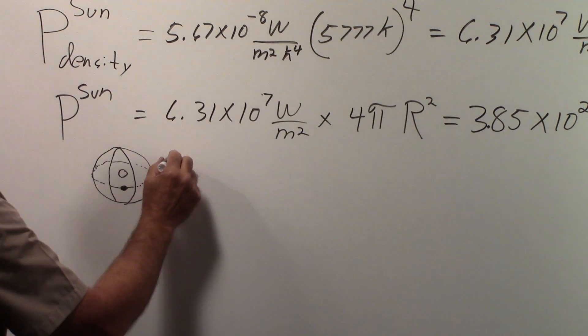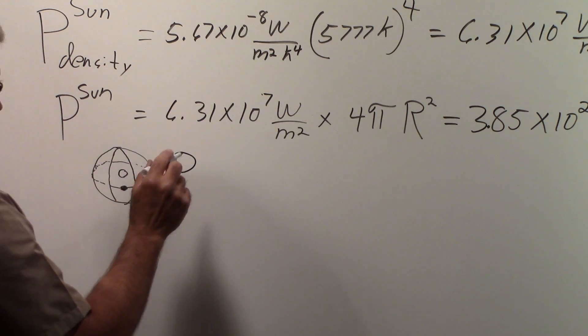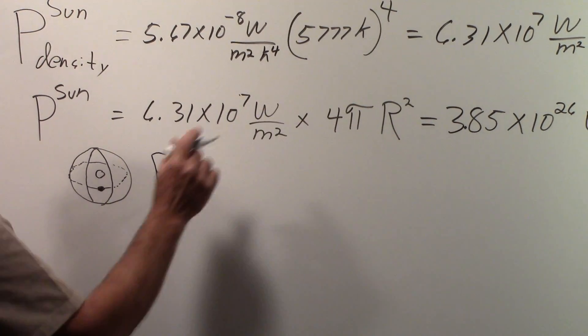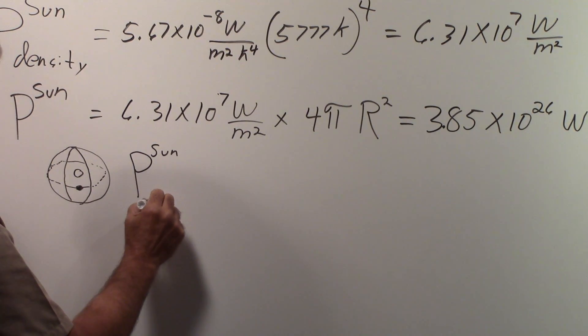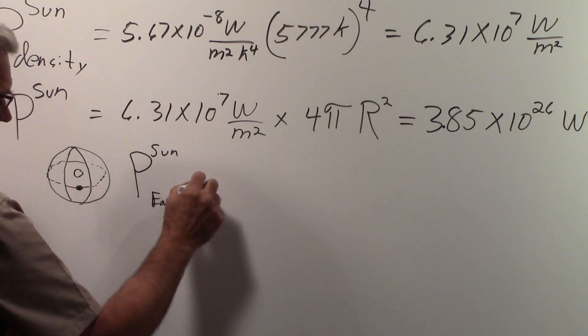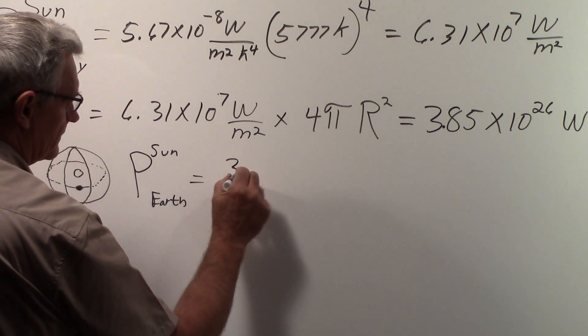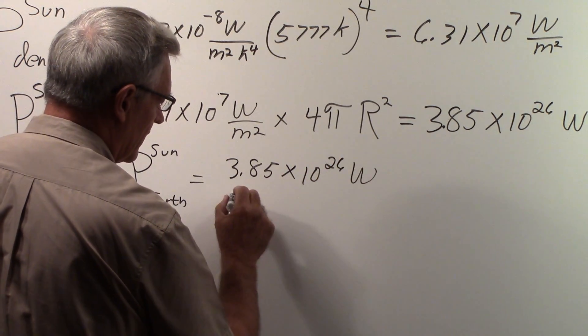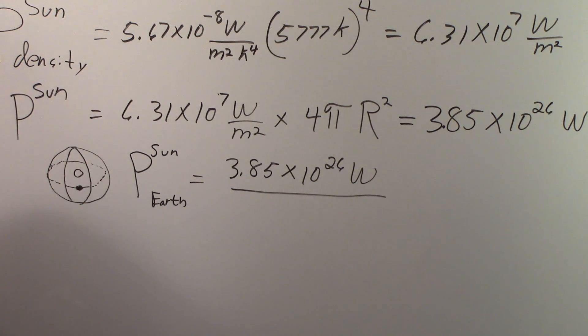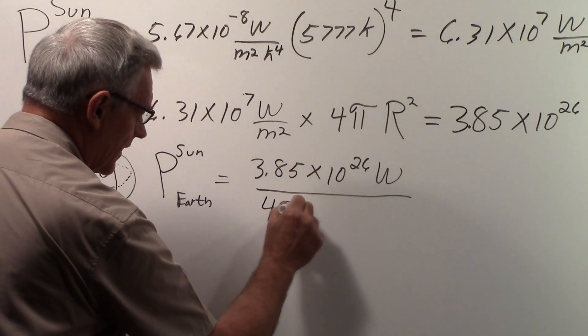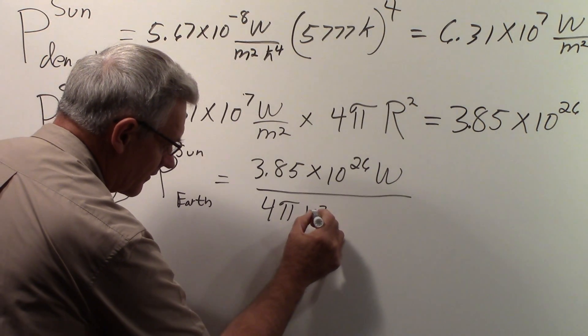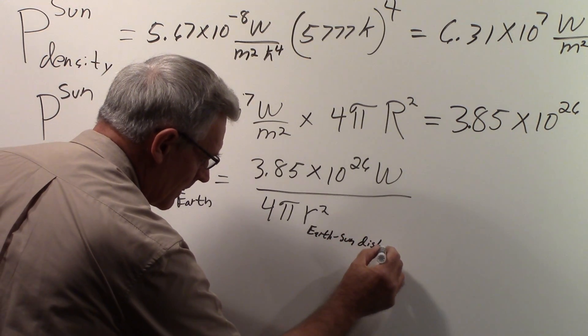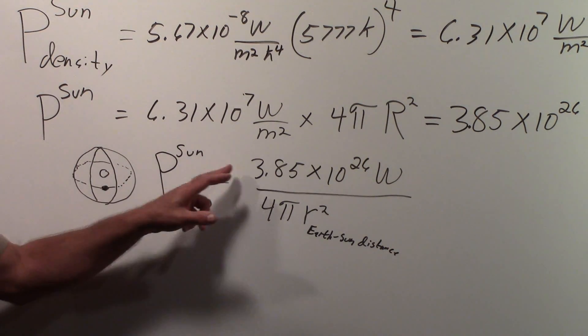So what we can do now is we can say that the power from the sun at the earth is going to be equal to that number, 3.85 times 10²⁶ watts, over this entire surface area, which is going to be 4πr², where r here represents the earth's orbit.